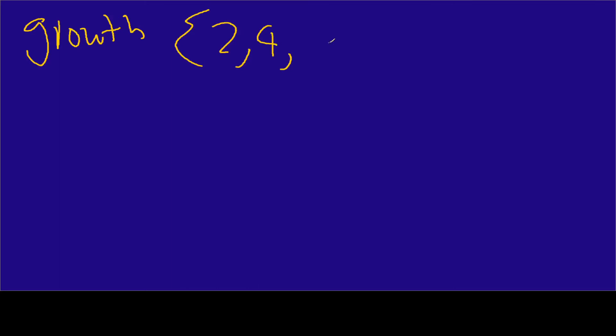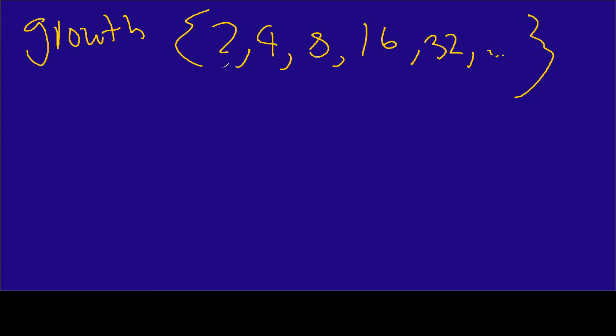We know we've got a sequence using a certain subset of the counting numbers, and we need to figure out what the pattern is. Our growth subset would be 2, 4, 8, 16, 32, and so on — dot dot dot forever. It's an infinite sequence; it never ends. Looking at these numbers, I'm starting to see that they all have a base of 2.